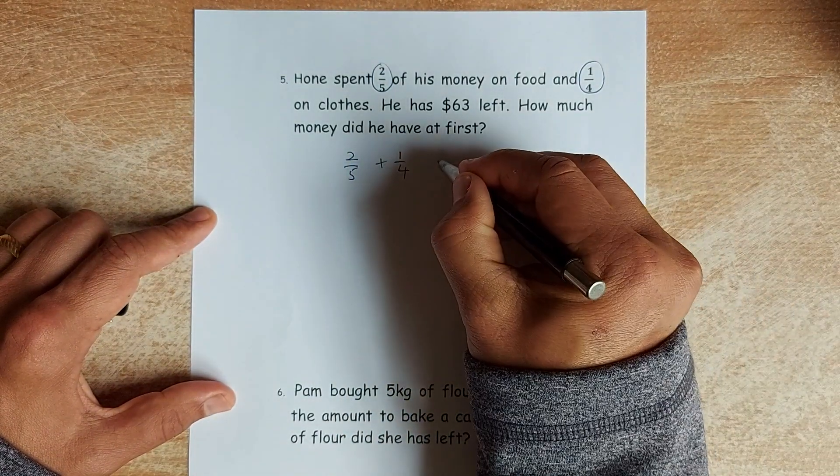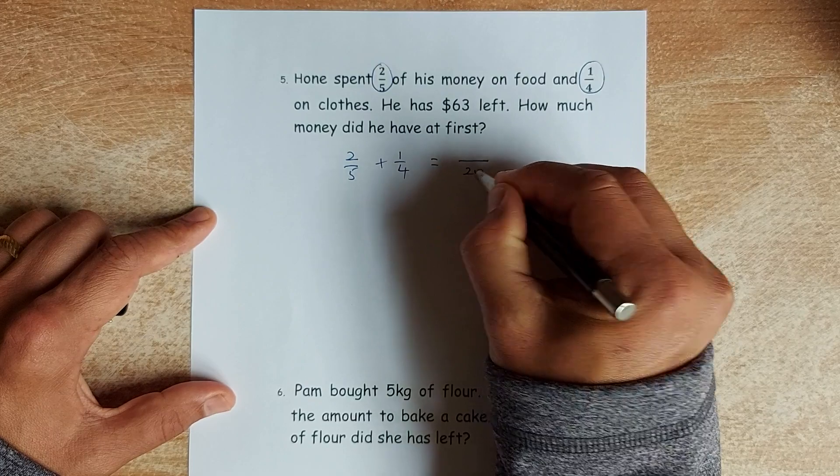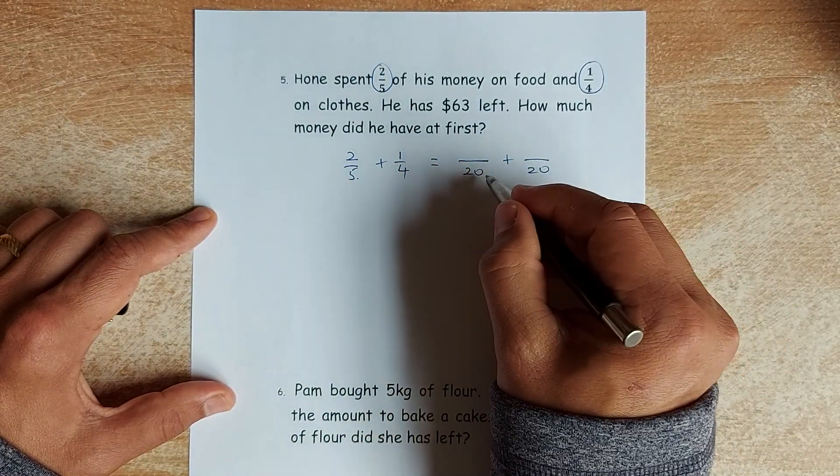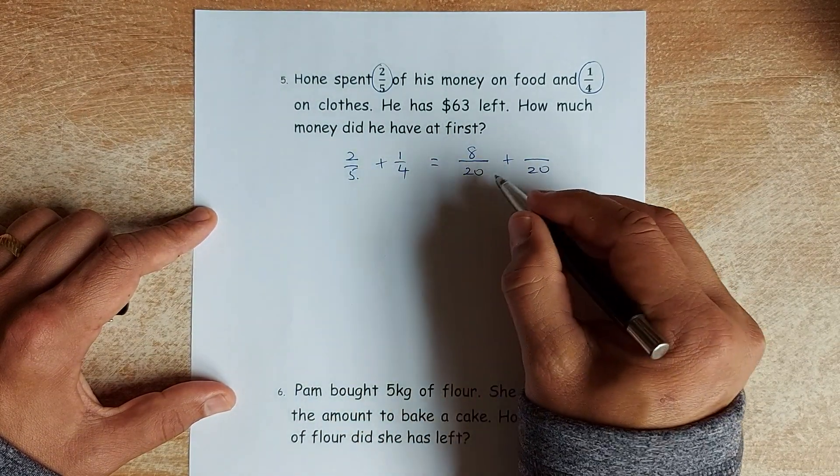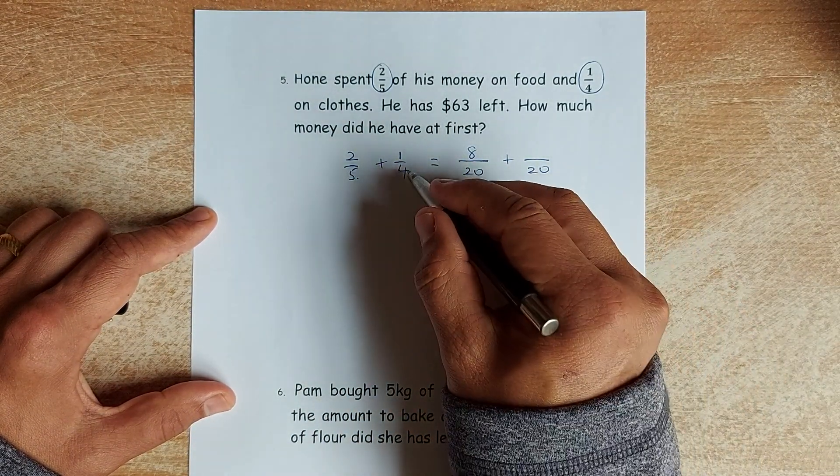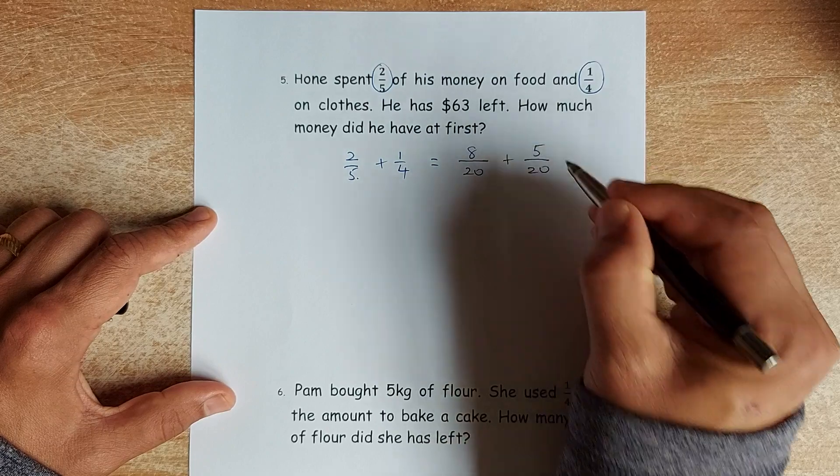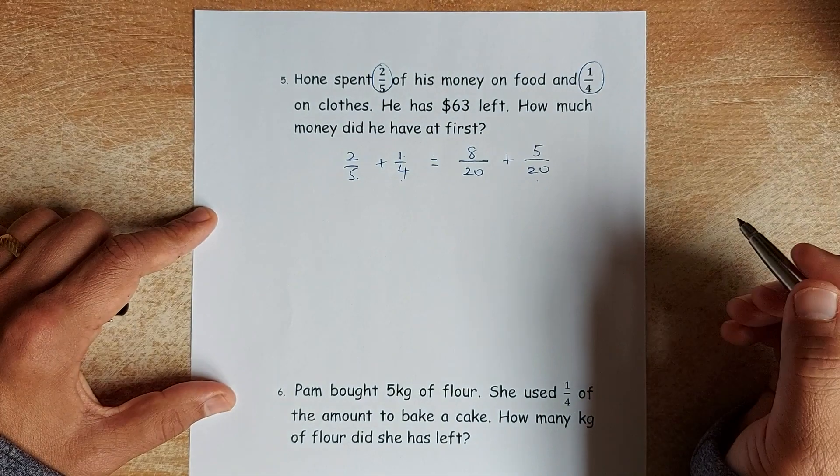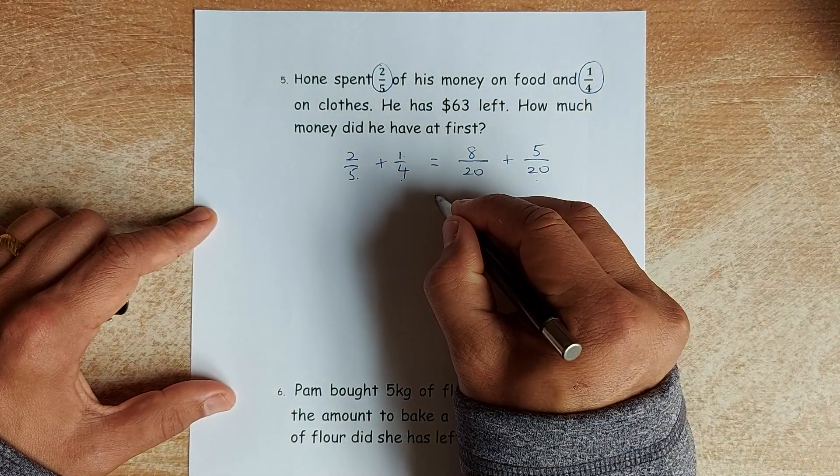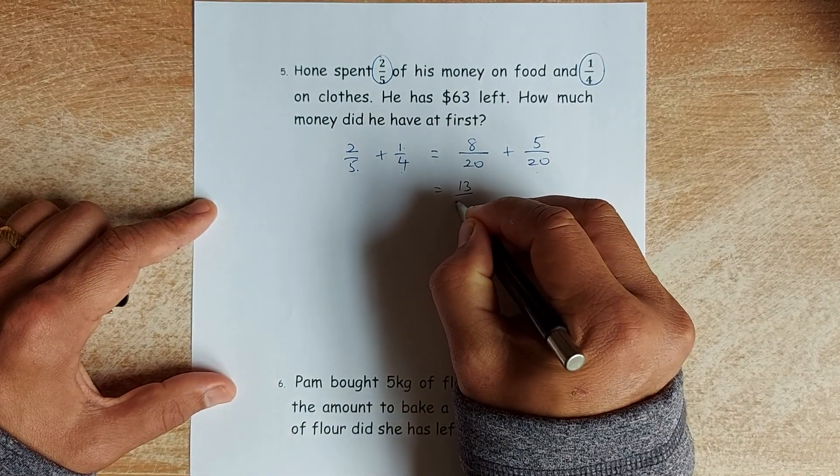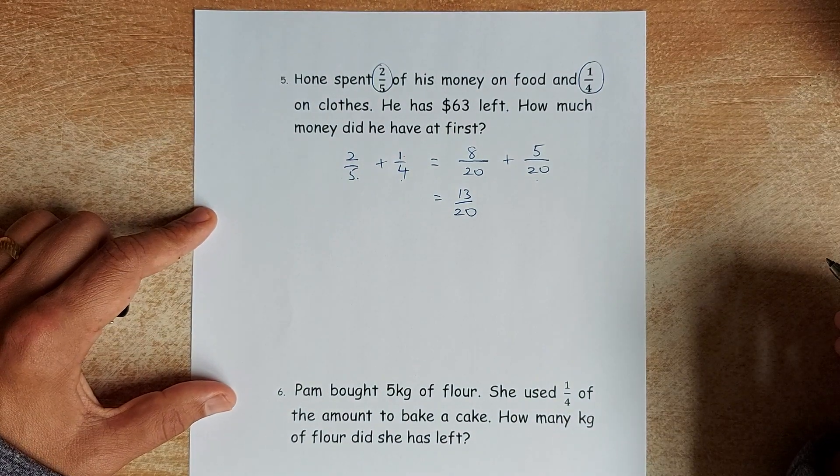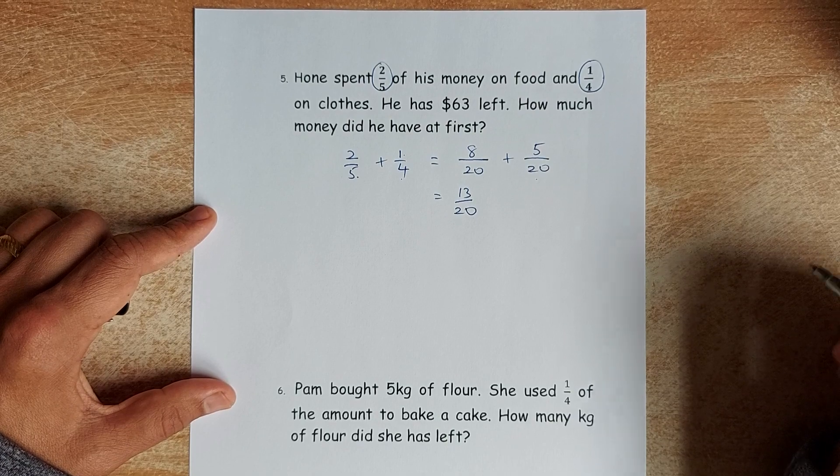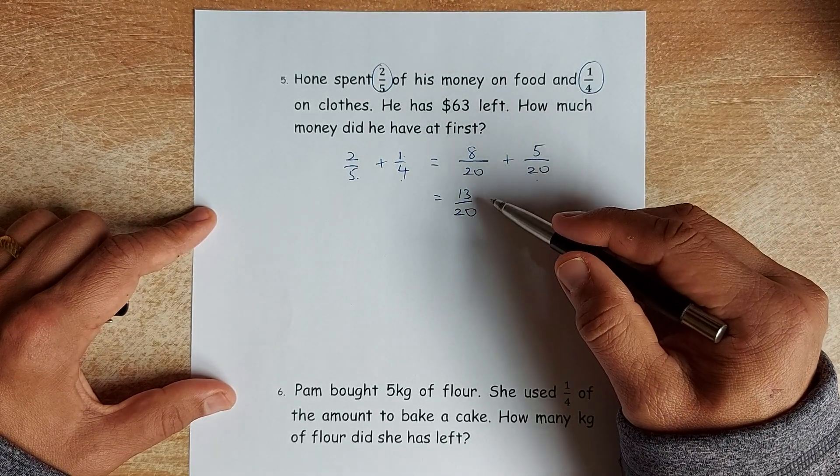Again, it must be the same denominator. So the common denominator is 20. So what happens is that you times 4. 5 times 4 is 20. So 2 times 4 is 8. Two-fifths is equivalent to 8/20. And one-quarter is equivalent to 5/20. So 4 times 5 is 20. So 1 times 5 is 5. So now when you add them up, it's 13 over 20. So now we are going to see how this is amount of clothes and food.